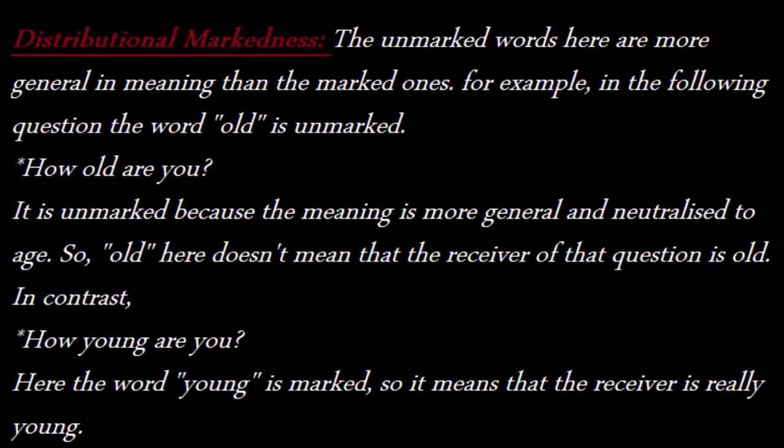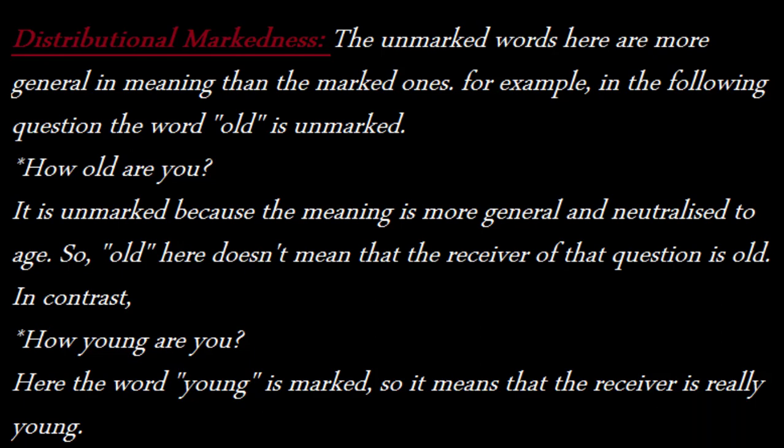The other type of markedness is called distributional markedness. The unmarked words here are more general in meaning than the marked ones. For example, in the question 'How old are you?', the word old is unmarked because its meaning is more general and neutralized to age.